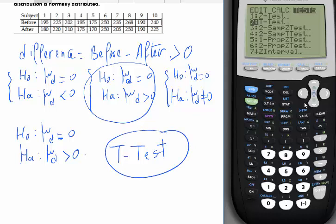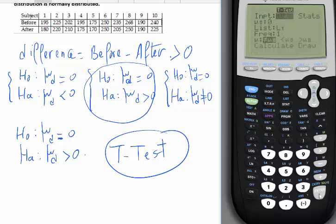All right. Enter. Now, do we have the data? Yes. We don't have a summary, so we choose data. Mu 0, 0. Keep it at 0. We're always testing against 0.